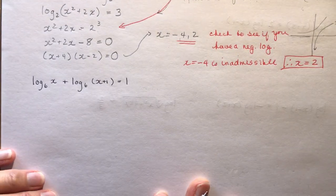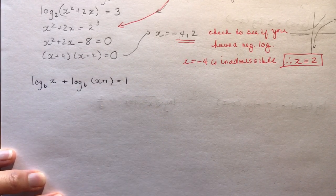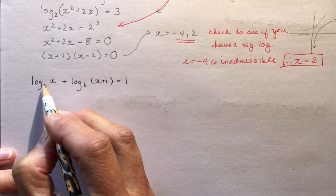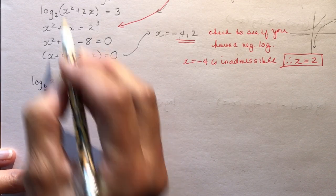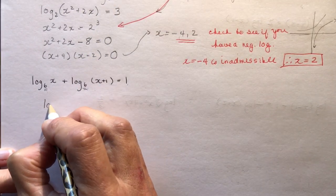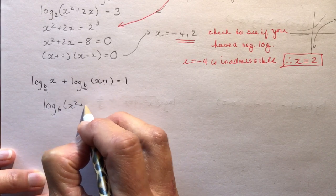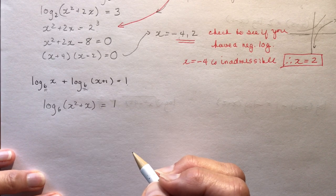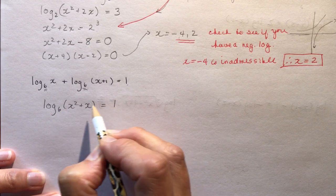Let's try a different one. Log base 6 of x plus log base 6 of (x + 1) equals 1. This one's already set up with the constant on one side and the logarithms on the other — and they are the same base. That's critical. These are both base 6, so log base 6 of x(x+1), which gives x squared plus x, equals 1. Now write it in exponential form: 6 to the 1 equals x squared plus x.